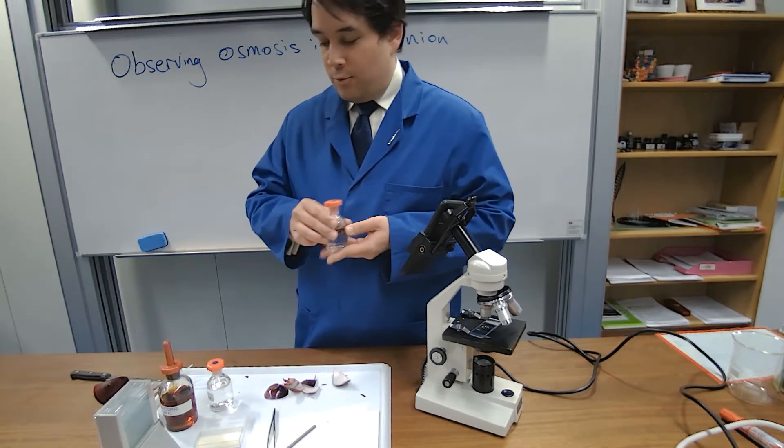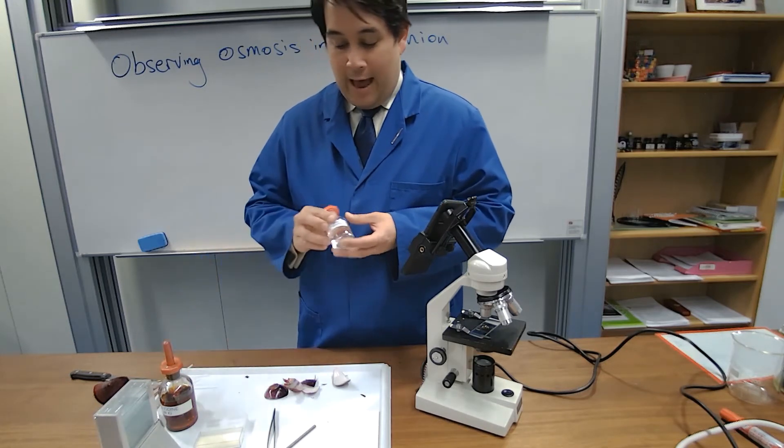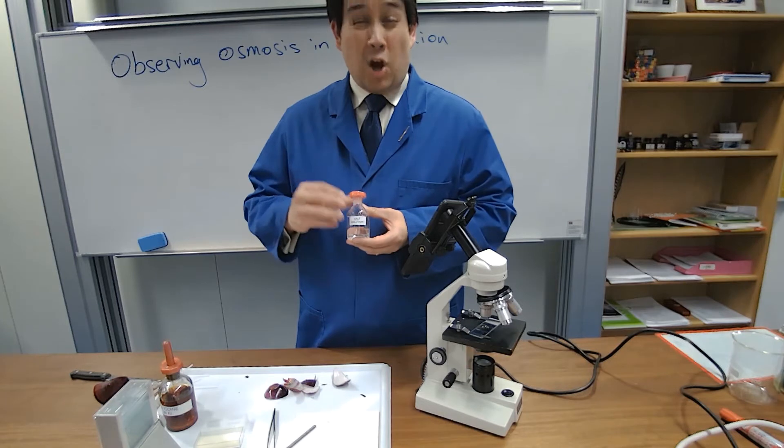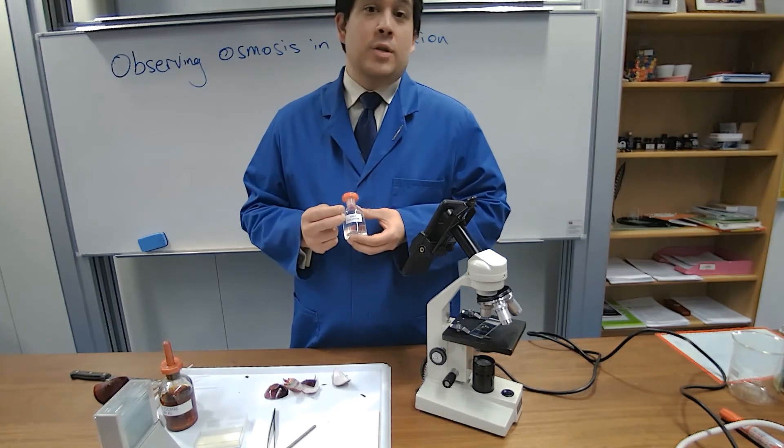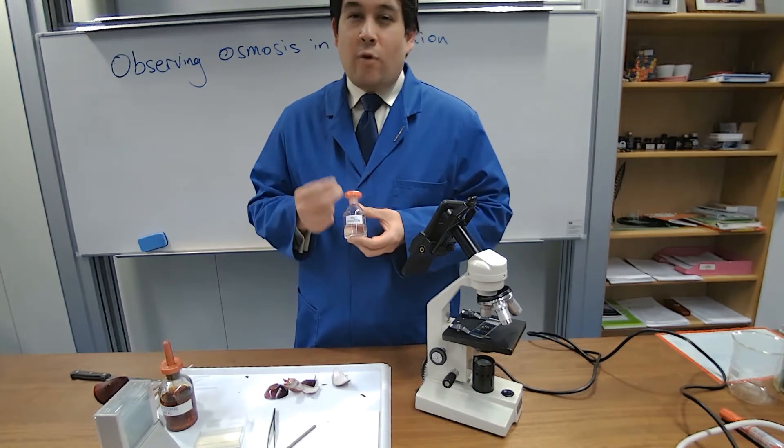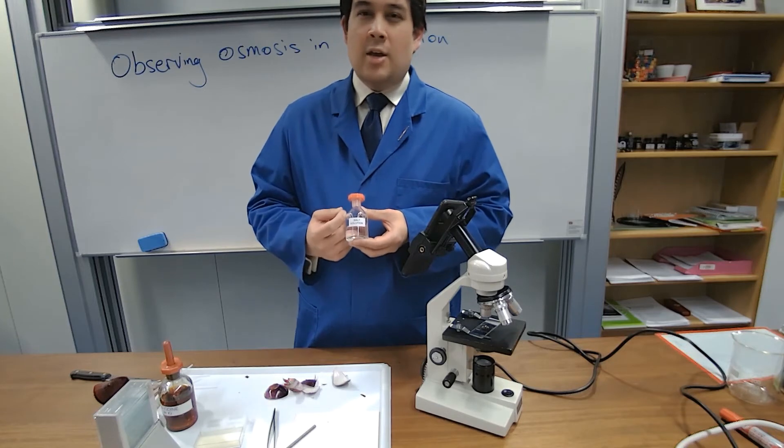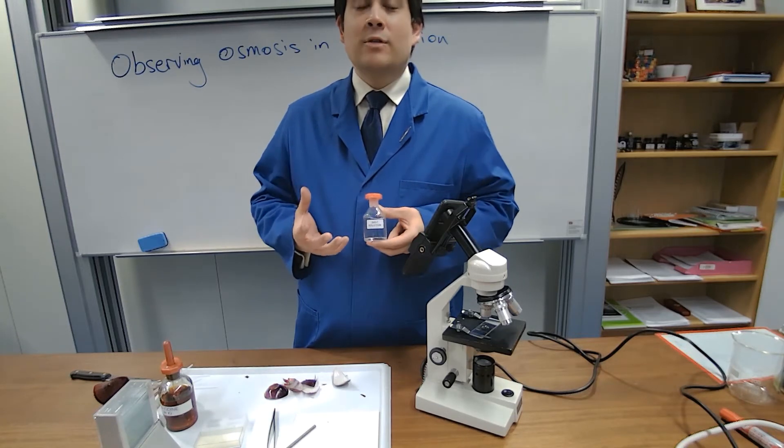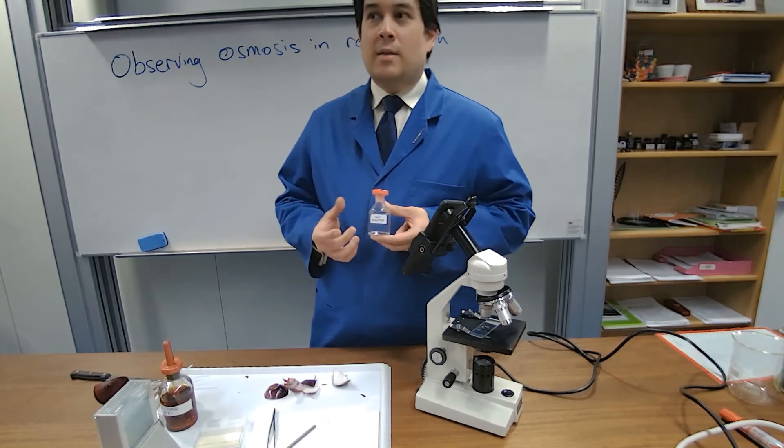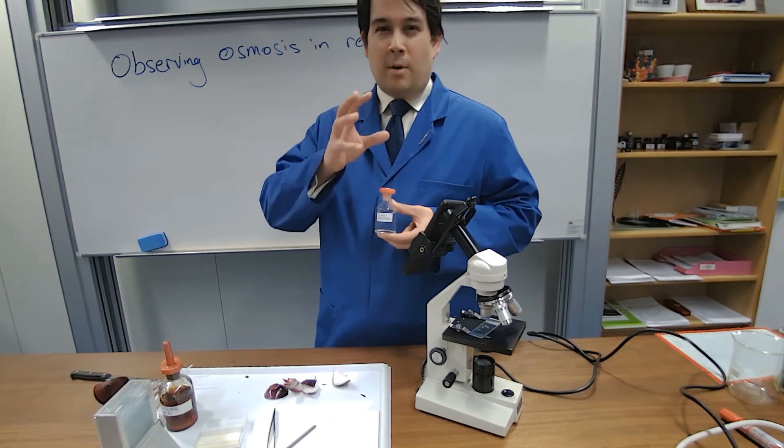After that, we're going to dab away the water. We're then going to add some really strong, concentrated salt solution. This is hypertonic, and therefore it should draw water out of the cells by osmosis. Then we should be able to see plasmolysis occurring.